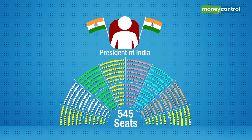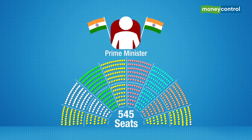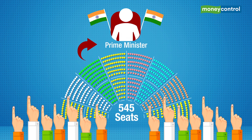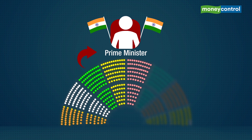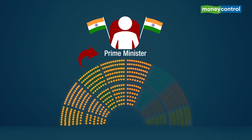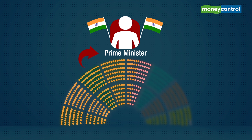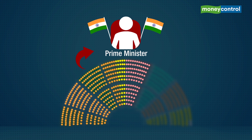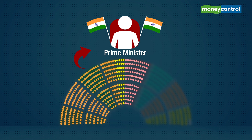In the Indian system, the Prime Minister is the head of the government and is appointed by the Lok Sabha rather than elected directly by voters. The party holding a majority in the Lok Sabha elects its leader as the Prime Minister. Should no party possess a simple majority, different parties will form coalitions until they acquire the requisite number of seats to elect a Prime Minister successfully.